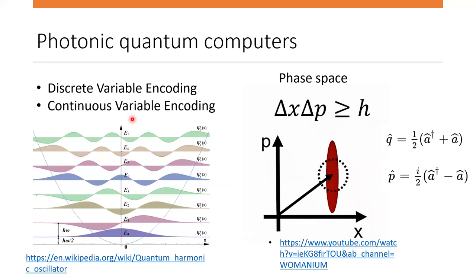So far we've discussed gate-based or circuit-based quantum computers, which rely on initializing qubits, applying gates, and measuring the output. But in measurement-based quantum computing, measurements are used to actually implement unitary operations on the qubits. There are two encoding approaches: discrete variable encoding — as used in superconducting qubits and trapped ions with two distinct energy levels — and for photons these can be two energy levels acting as a quantum harmonic oscillator, or the polarization of a photon, either vertical or horizontal. The advantage of discrete variable encoding is that it's fairly easy to generate single photons, for example using quantum dots. However, many physical qubits are needed to realize one logical qubit, and no error correction scheme for discrete variable photonic encoding has yet been developed.